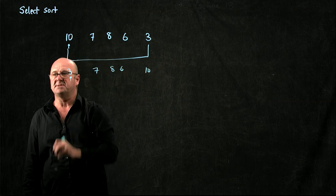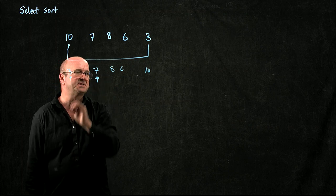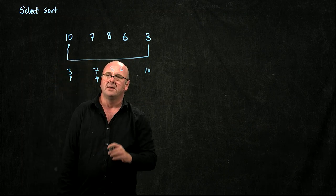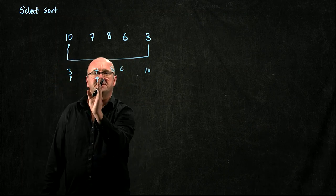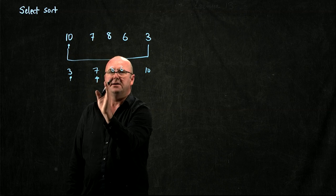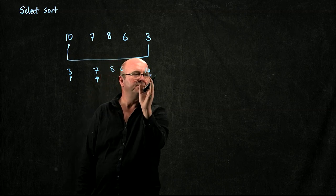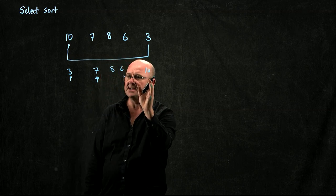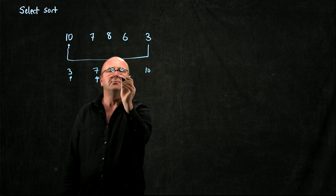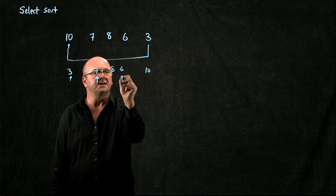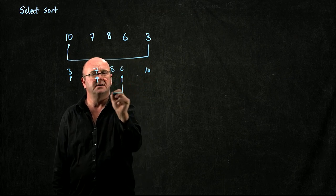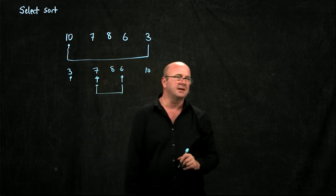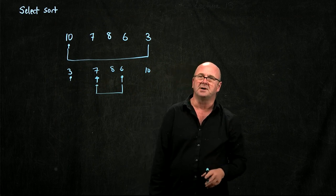So we're done with position 0, we go to position 1, we start at position 1, and we go through and we find the smallest thing in the list. We take the smallest thing in the list and we swap it with the thing at position 1.